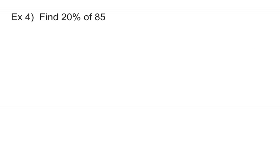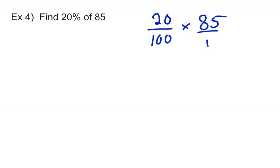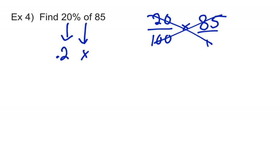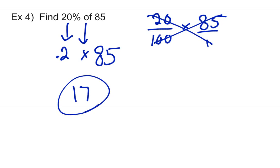We've done these problems before. Find 20% of 85. The old fraction way: percent means a number out of 100, the 'of' means multiply by 85. Using decimals — the new method — 20% becomes 0.2 or 0.20. The 'of' means multiplying, and 85 is our whole number. So we take 0.2 times 85, which gives us 17. Much easier than working with fractions — just change the percent to a decimal and multiply.